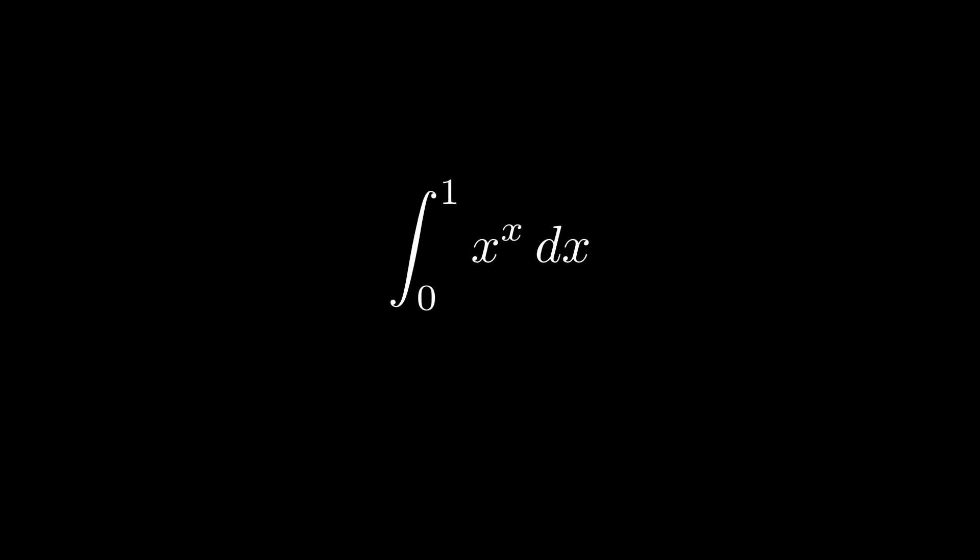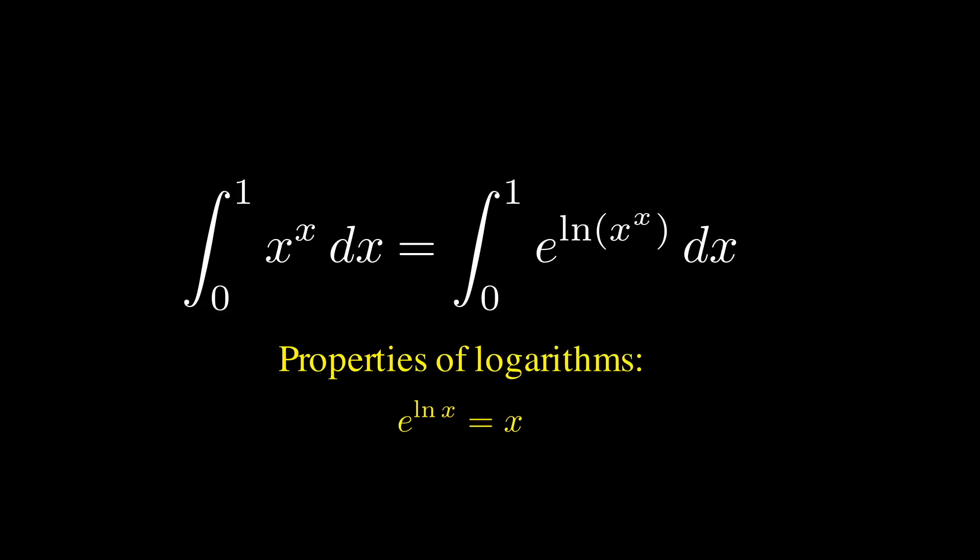We'll start this off in a similar way we often do with these types of problems: properties of logarithms. Insert an e to the ln so that we can drop that exponent down in front of the logarithm. This is a very common technique.